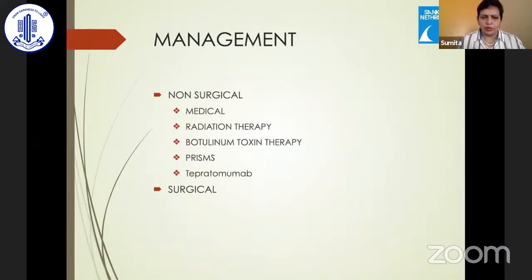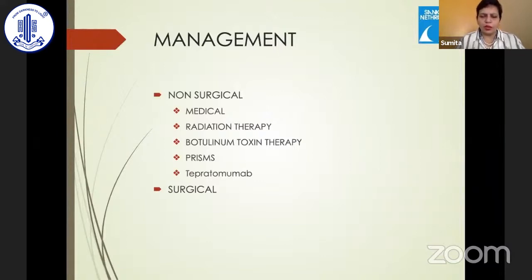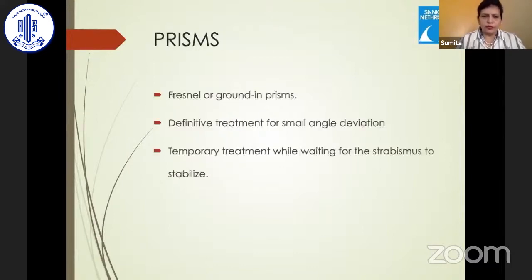Management is divided into non-surgical and surgical. Non-surgical options include medical management with steroids, which are effective in controlling inflammation but less effective in alleviating diplopia in the active phase. Radiation has been tried. There is renewed interest in botulinum toxin. Prisms can be given in the active phase and can sometimes be a definitive treatment for small-angle strabismus. Recently, teprotumumab — an insulin-like growth factor receptor 1 antibody — has shown very hopeful results for patients in the active phase in terms of proptosis, diplopia, and quality of life.